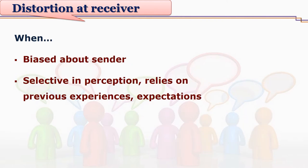Distortion may be at the receiver also. Many a times the receiver is biased about the sender. For example, students may dislike a particular teacher, or be afraid of a teacher, or seniors may have said something bad about the teacher, so learners are biased even before listening to or meeting the teacher. The receiver is not ready to receive the message from that particular sender. Sometimes receivers are selective in perception — they rely on their previous experiences and have their own expectations, and if they are biased or have wrong previous experiences, the new message does not reach them.